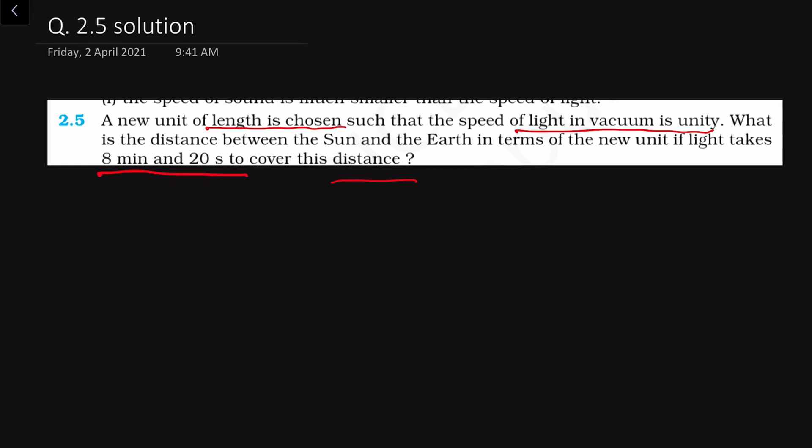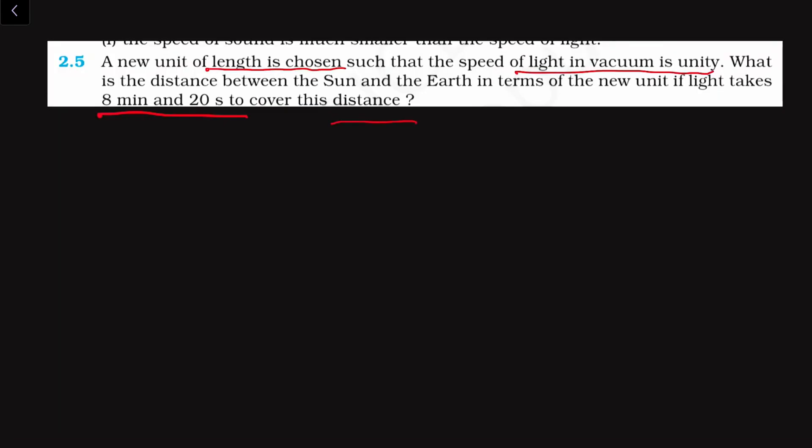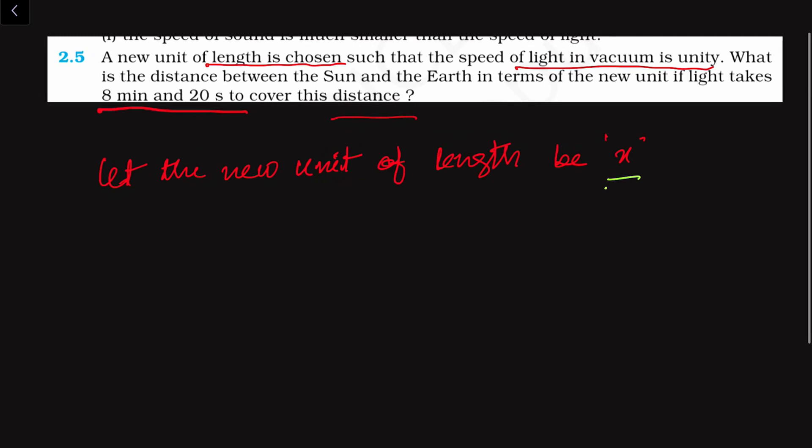So first of all, what we have to know: what is given and what we have to find out. We are given that in terms of the new unit of length, light travels at the speed of unit length per second. Let us assume that the new unit of length is small x.